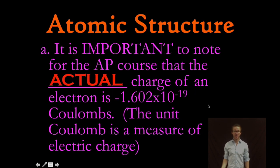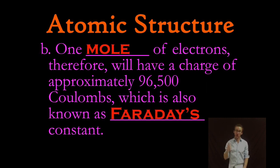Now it's important to note for the AP course the actual charge of an electron is negative 1.602 times 10 to the negative 19 coulombs. Coulomb is just a measure of electric charge. So a single electron doesn't have a very large charge. What will be important though is to recognize that a mole of electrons or Avogadro's number of electrons will have a charge of approximately 96,500 coulombs and that charge of one mole of electrons is known as Faraday's constant.